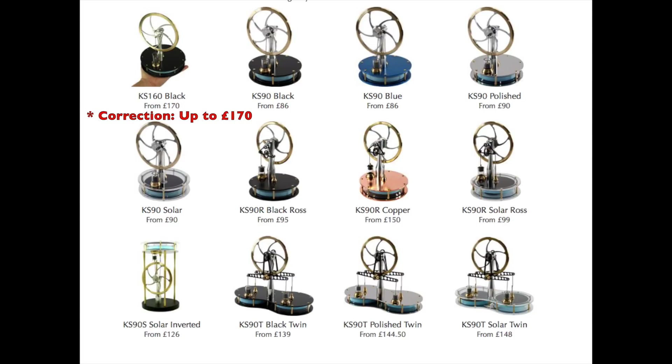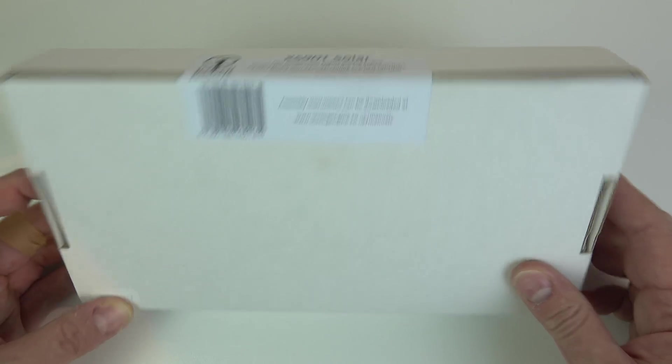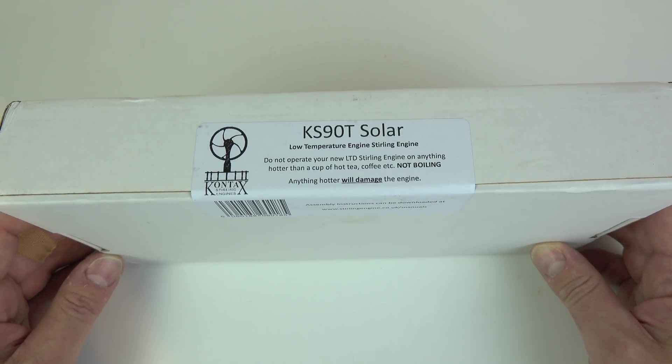These things aren't cheap though, they start at £86 and they go up to £150. The model I chose cost £148. Now you don't have to buy them as a kit, you can get them pre-assembled, but the difference in price is only about £10 or so. So really the reason people are buying them as kits is because they enjoy putting kits together, not really to save a lot of money.